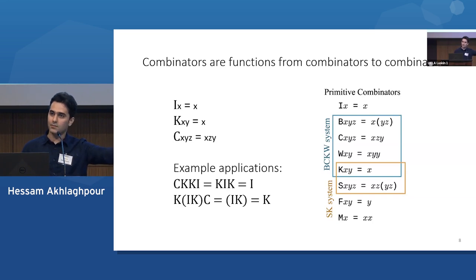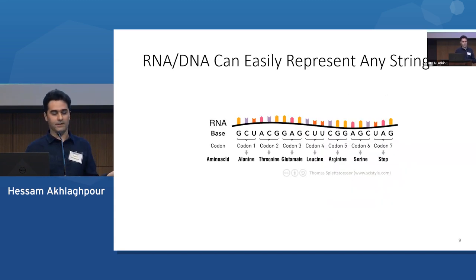So that's the combinatory logic side of things. How do I implement this with RNA? Well, representing strings is easy with RNA. In fact, we already have a precedent for that. Biology uses triplets of nucleotides to encode for a different kind of alphabet. So the alphabet of nucleotides can be mapped to the alphabet of amino acids with a codon map. So it's trivial to imagine a representation scheme that can be used to represent different kinds of combinators, which are also essentially just strings.